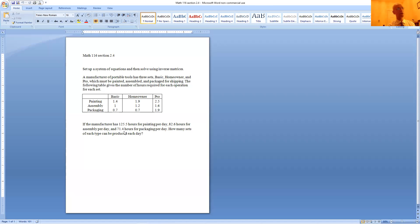So this is one of the problems that we are expected to use a 3x3 matrix. We have a manufacturer of portable tools having three sets: basic, homeowner and pro. They must be painted, assembled and packaged for shipping. So we have the table that the painting for basic is going to take 1.4 hours, then the homeowner 1.9 and the pro 2.5 and on and on.